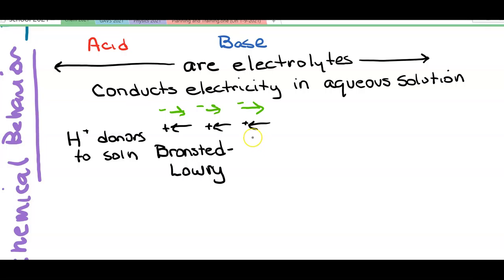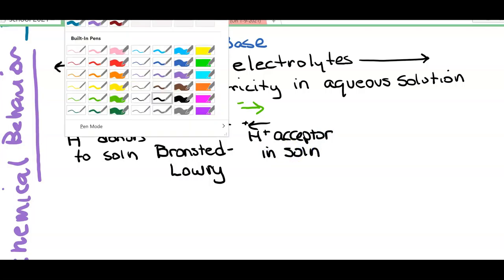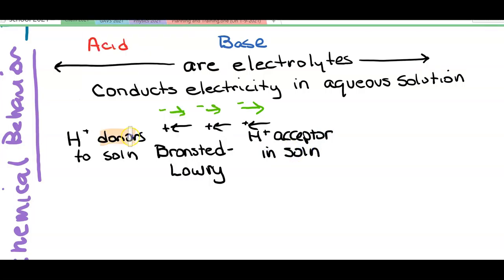A base is said to be a proton acceptor. So you can see that it's two sides of the same coin. We've got donors and we've got acceptors, both of a proton. And I've said proton and I've written a hydrogen ion both times. Why have I done that?